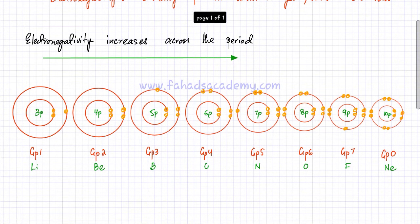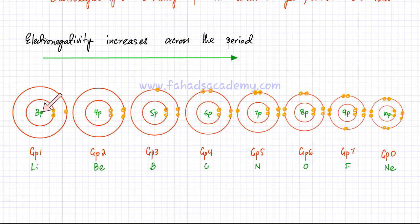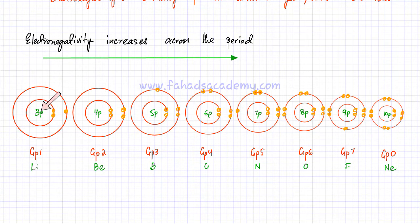I've drawn one period of the periodic table — this is period number 2. So lithium is in group 1, beryllium group 2, boron in group 3, carbon in group 4 and so on. I've drawn the atoms of all these elements. Lithium has 3 protons and 3 electrons. The nucleus only has a plus 3 charge, which means the force of attraction between these 3 protons and 3 electrons is not going to be very strong.